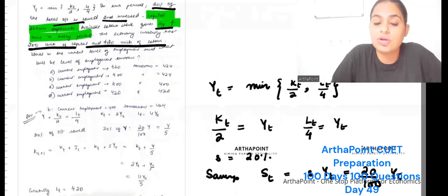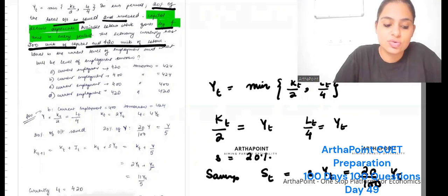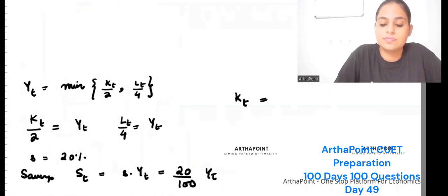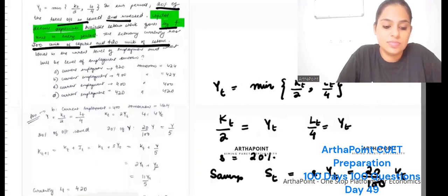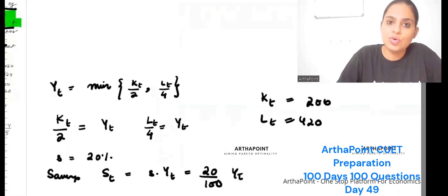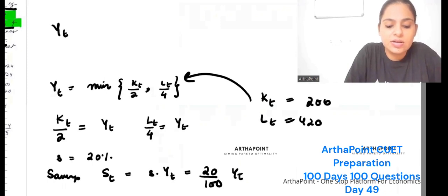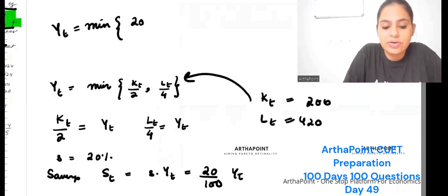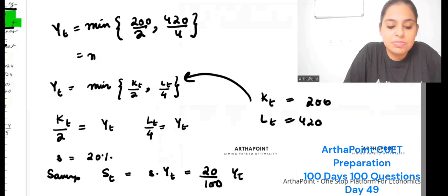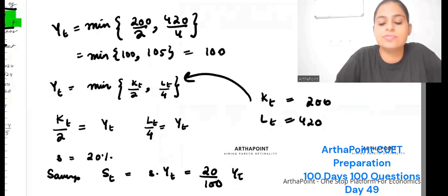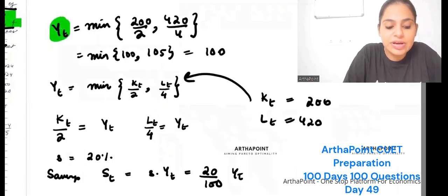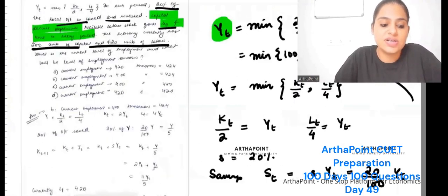The economy currently has 200 units of capital and 420 units of labor, so K_t = 200 and L_t = 420. With the min function, Y_t = min(200/2, 420/4) = min(100, 105) = 100. So output in period t is 100.